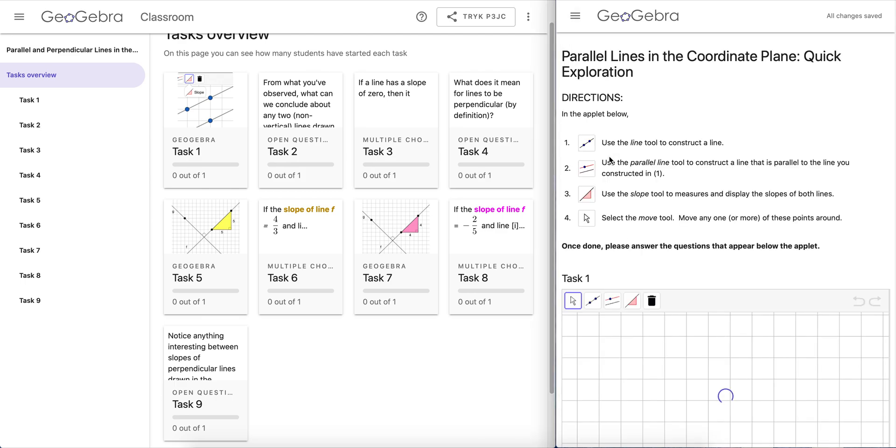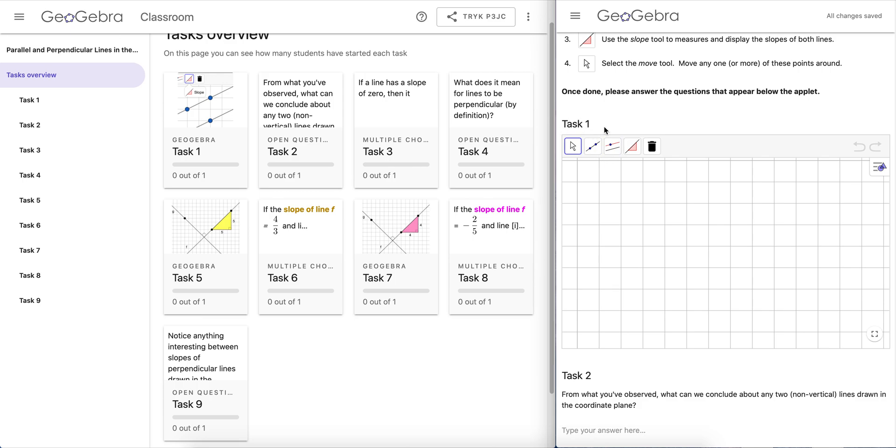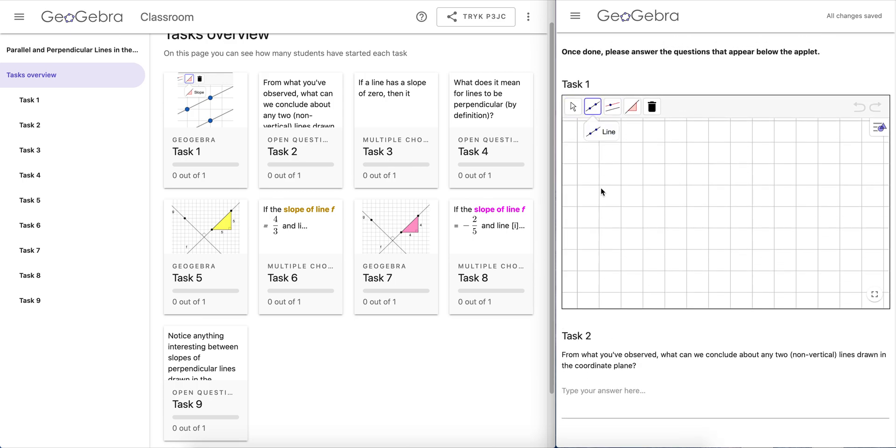And if I, as a student, go into the first activity, you'll notice that the first applet says task one. The question following says task two. And so, I can now begin to work on the tasks that my teacher assigned to me.